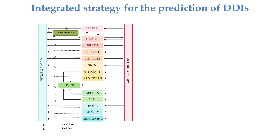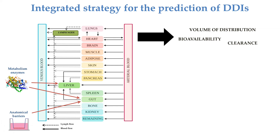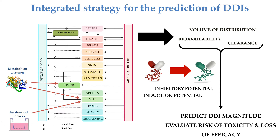One of the most important applications of physiologically based pharmacokinetic modeling is the prediction of drug-drug interactions. We can predict the magnitude of drug-drug interactions starting from a mechanistic description of drug distribution, then integrate key DMPK data into our mechanistic model to derive key pharmacokinetic variables — volume of distribution, bioavailability, and clearance. If we have a description of the inhibitory or induction potential of a concomitant drug on key processes, we can then predict drug-drug interaction magnitude, evaluating risk of toxicity and loss of efficacy.